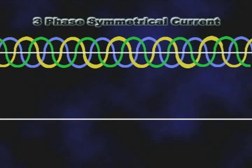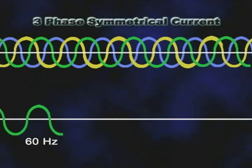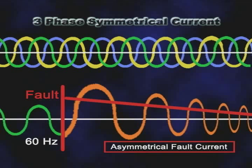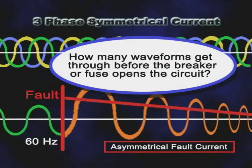Now, let's consider how long the arc is present. As I mentioned earlier, the circuit breaker or fuse will require some time to sense the overcurrent condition and open the circuit. If we use a 60 hertz system, there are 60 cycles, or complete sine waves, every second. One-tenth of a second equals six cycles. So, when a fault occurs, some waveforms get through before the protective device opens the circuit.